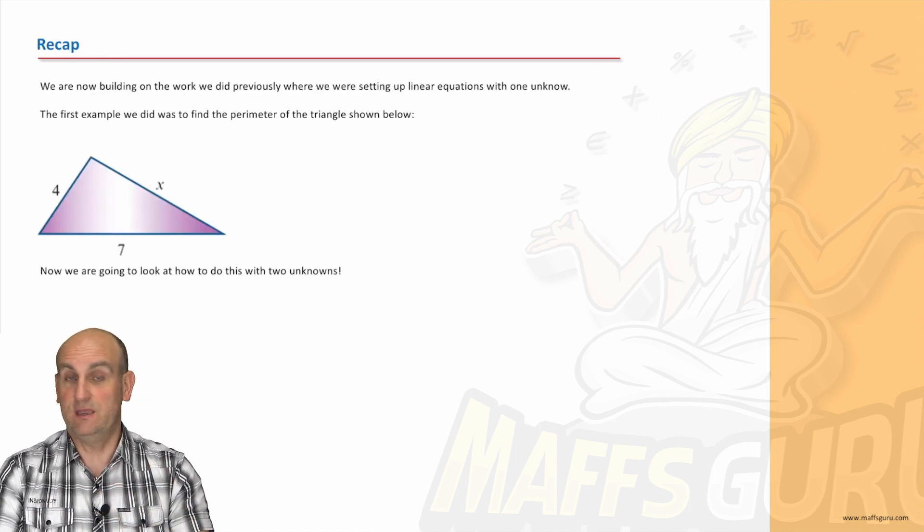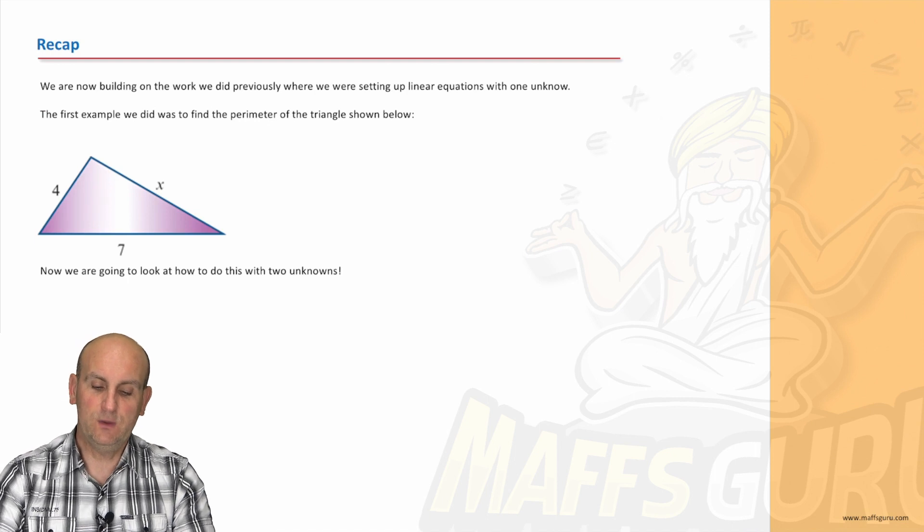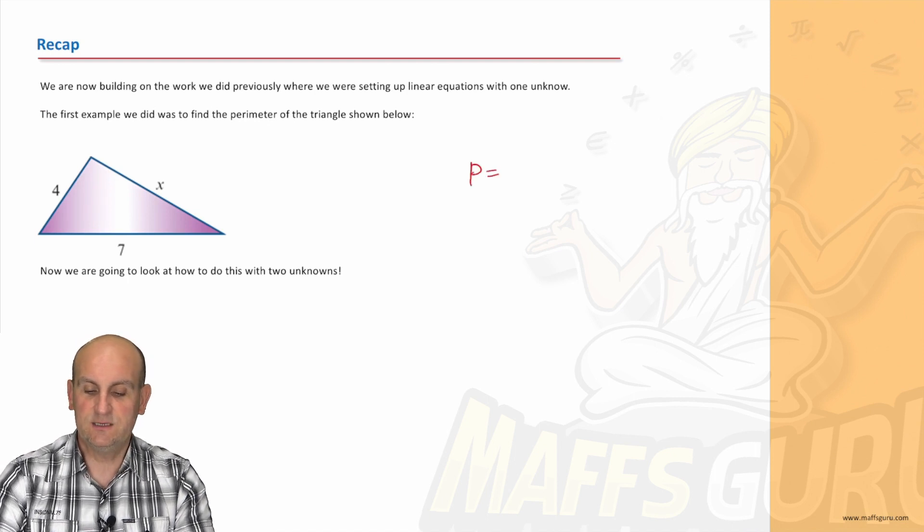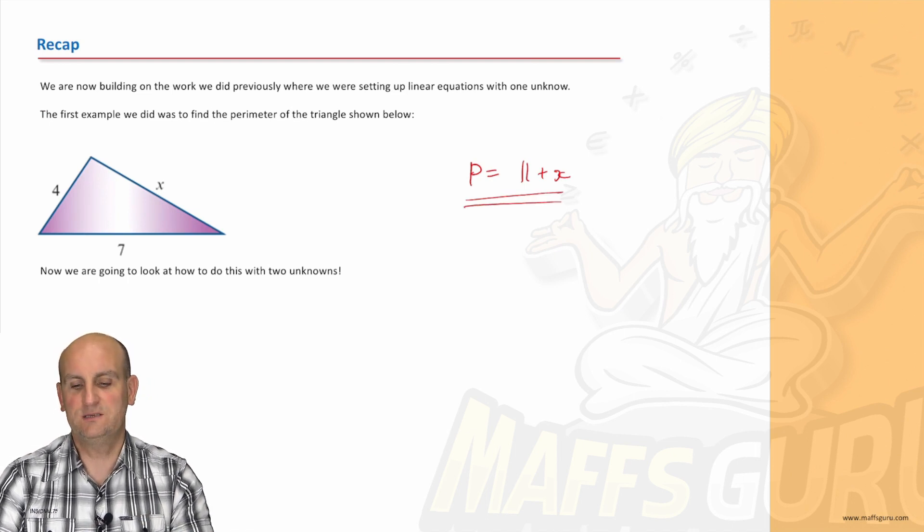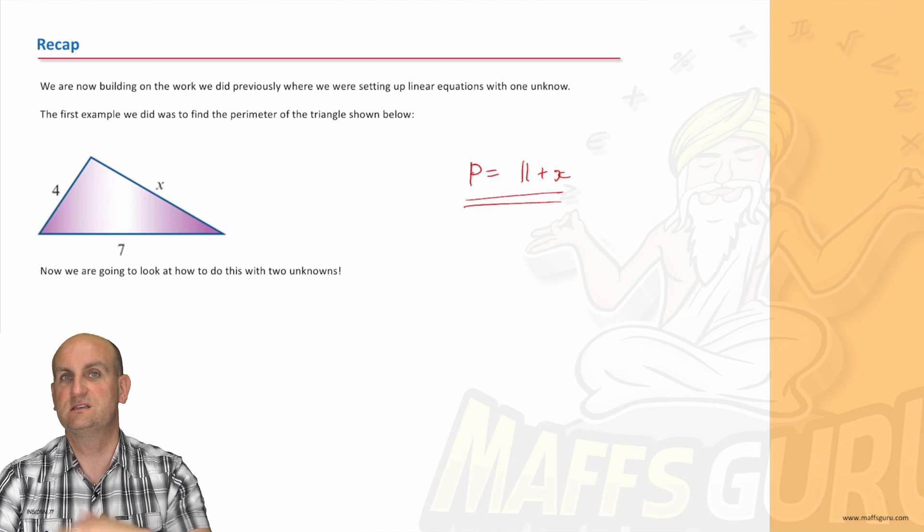Remember we built, oh, I love this example, I'll keep using it over and over again. Remember this one here, we came up with an equation that said P was equal to 11 plus X. Well, in that situation, we've got one unknown. Yes, we've got the X that we didn't know, and we could substitute it in, we could find tables of values, blah, blah, blah.